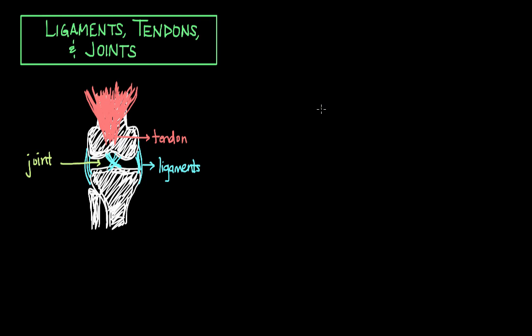There are different types of joints found throughout the body. The first type is called synarthroses, which are immovable joints where two bones are fused together. For example, you'll find these types of joints in the skull. When you were a baby, your skull was made up of a bunch of different pieces that grew as your brain grew. Then as an adult, the joints between these bones fused and became synarthroses.